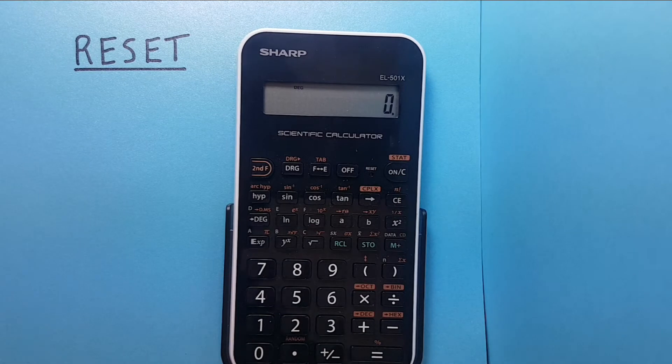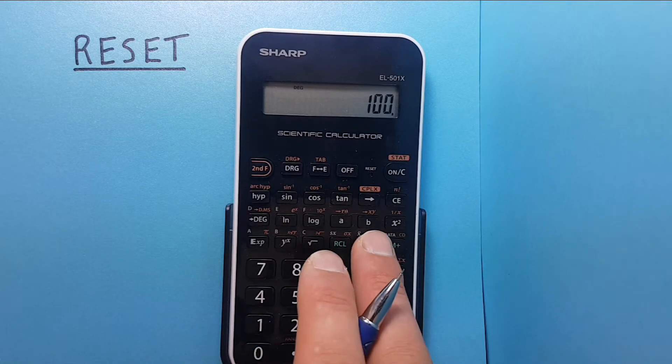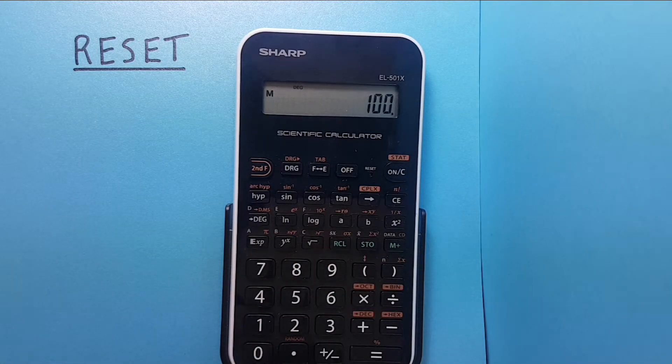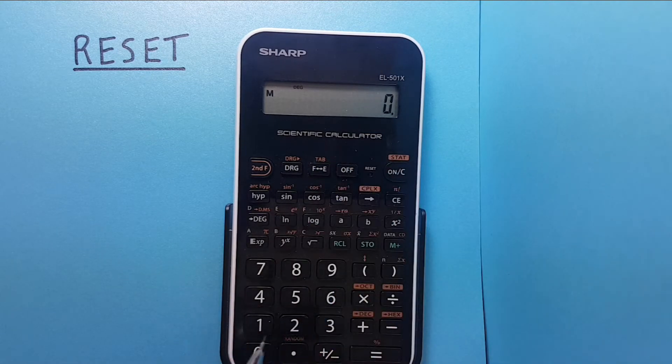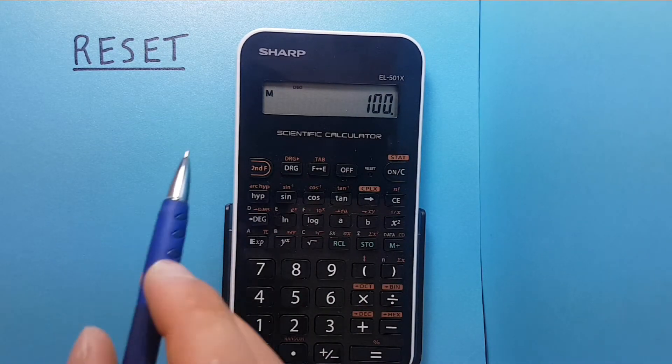We can confirm this if we wanted to by storing a number to the store slot. We'll save 100. Stored that. Confirm we have it stored. Recall 100. Yep, there we go. We also see the M there.